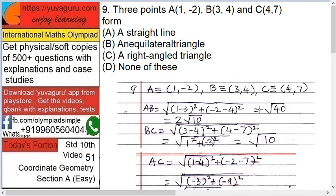3 the whole square plus minus 2 minus 4 the whole square, that is root 40. Now you can solve it or leave it as root 40, which equals 2 times root 10.